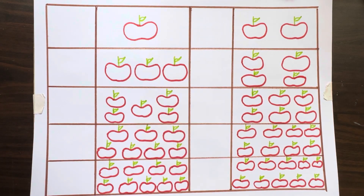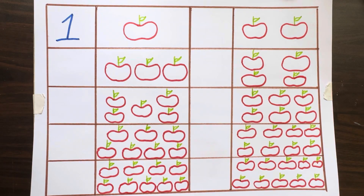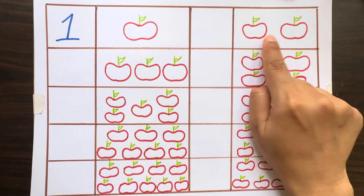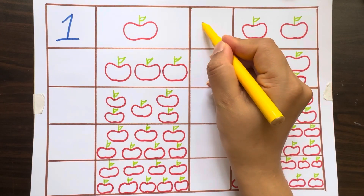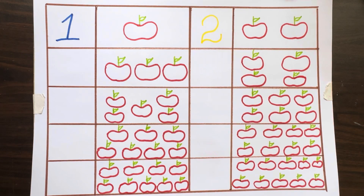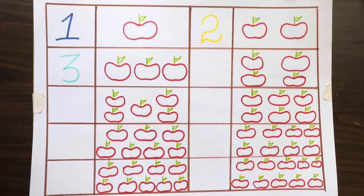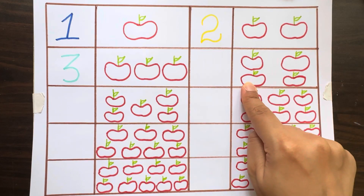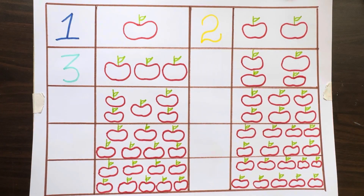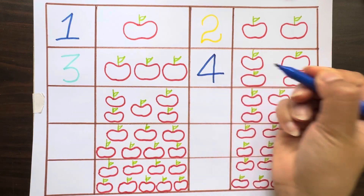One apple. One, two apples — number two. One, two, three — we have three apples. One, two, three, four — four apples we have in this box, number four.